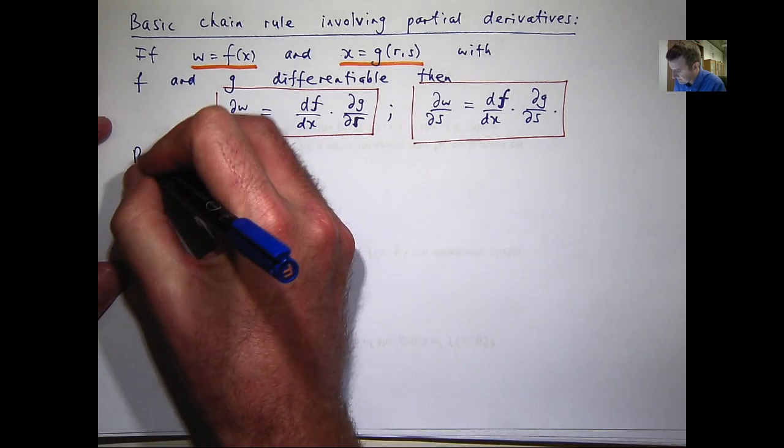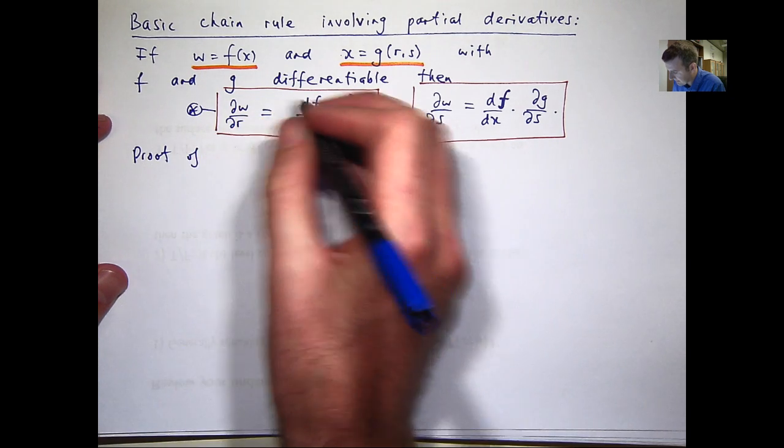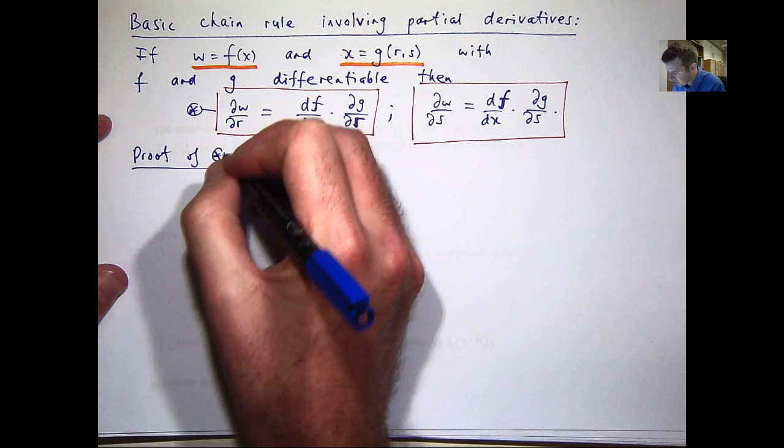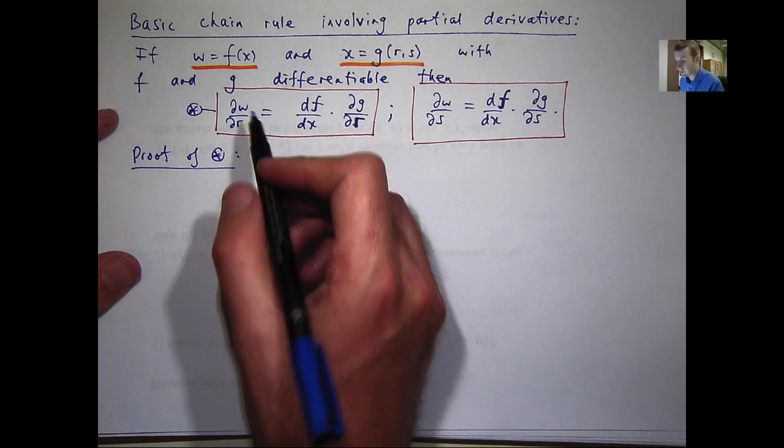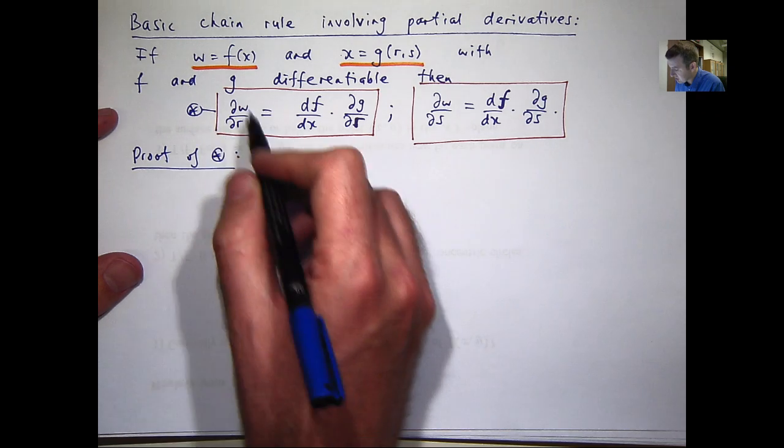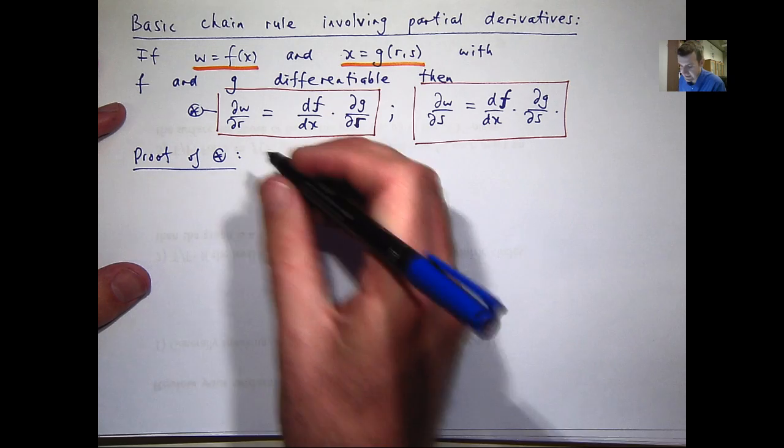Okay, so I'm just going to prove the left-hand chain rule here. Now, essentially, what we want to do is show that this derivative in its limit form is equal to this product.